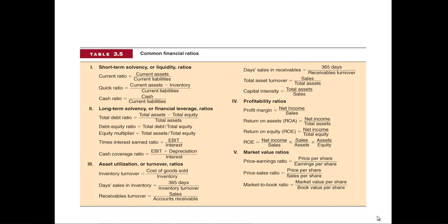We generally break up the analysis into six different types of ratios. Short-term solvency or liquidity, which measures a firm's ability to meet its short-term obligations. Can it make payroll? Can it pay its suppliers? Can it pay its taxes? Can it pay those things that will come due within the year?